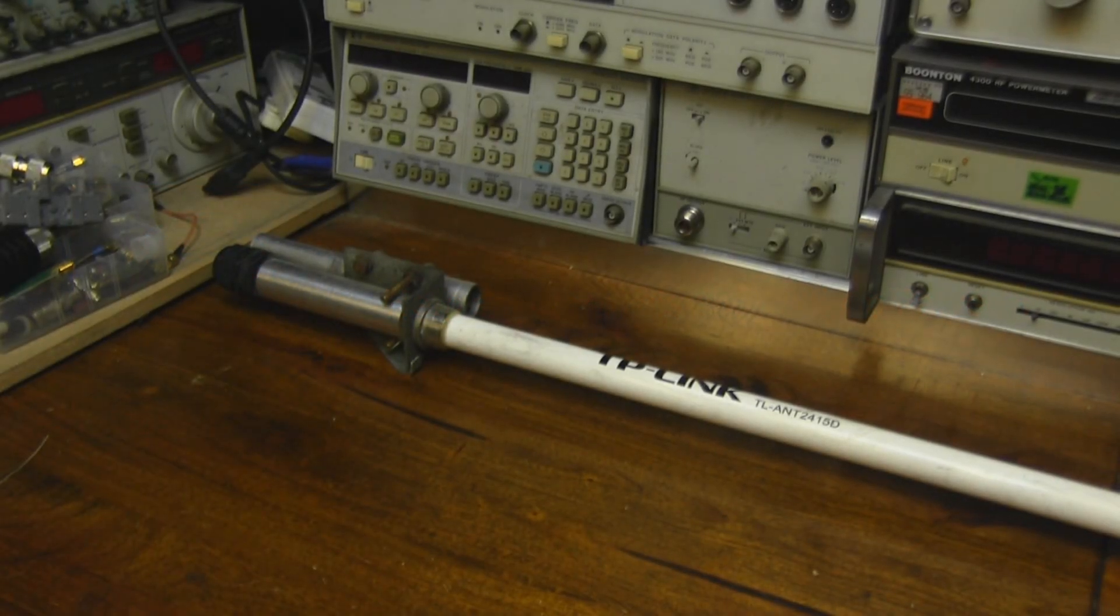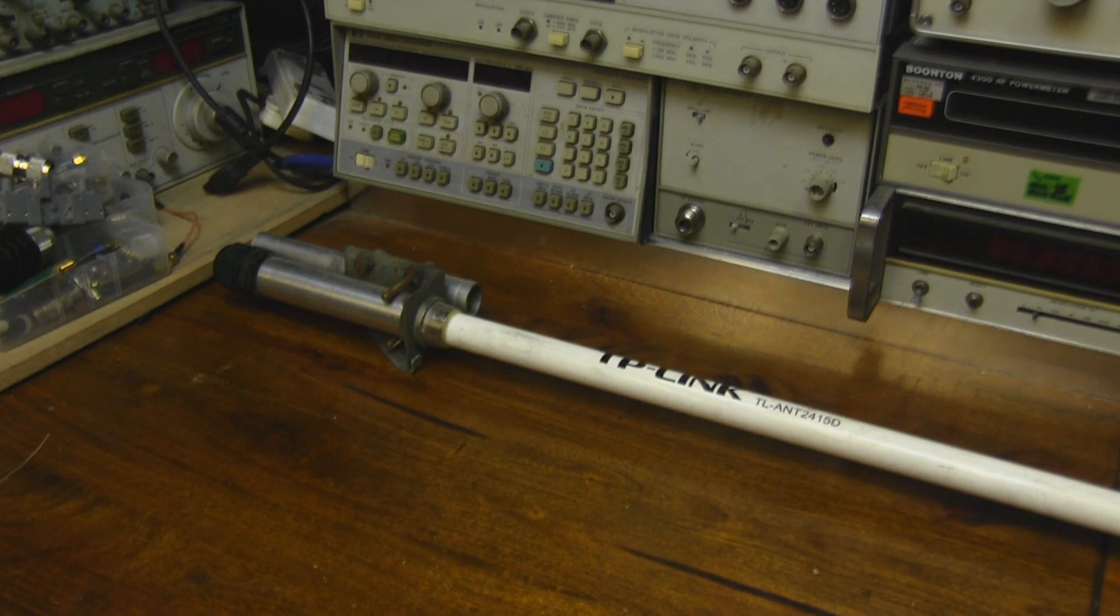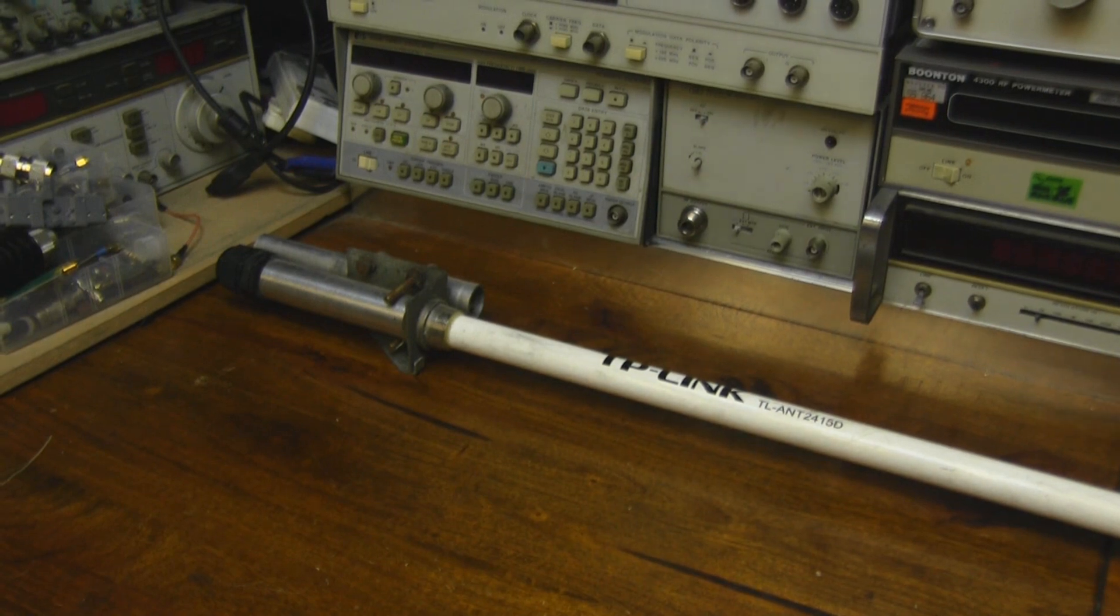Now I've got something on the bench that I've had for quite a while, but I didn't really know how to film this purely because it's so big. It's the TP-Link TL-ANT2415D, the last version of this particular antenna. It's an omnidirectional antenna, the biggest one that TP-Link ever made.